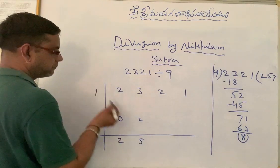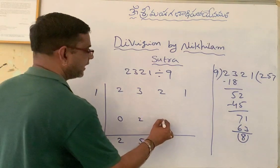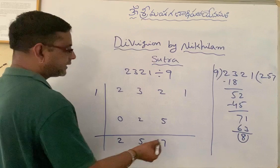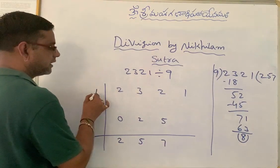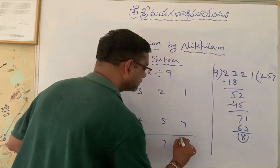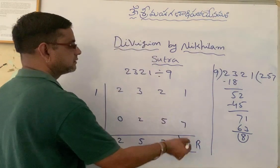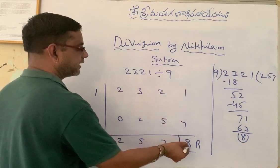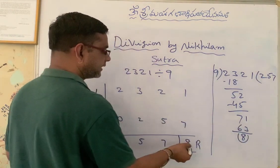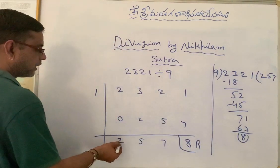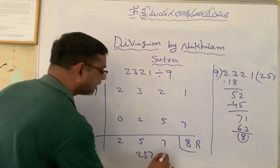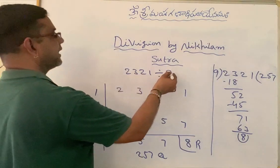Multiply this 5 with Nikhilam: 5 ones are 5. Add these two, we are getting 8. So this is 8. And the last number — when we add 1 plus 7, we are getting 8, and this 8 is nothing but our remainder. And if you observe here, 257 is the quotient of 2321 when it is divided by 9.